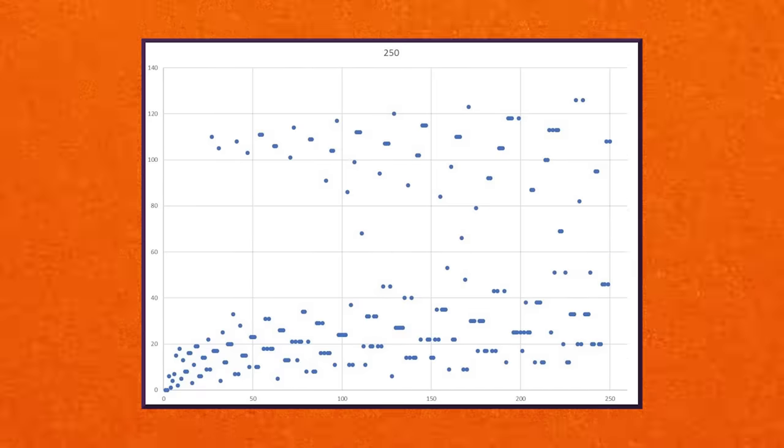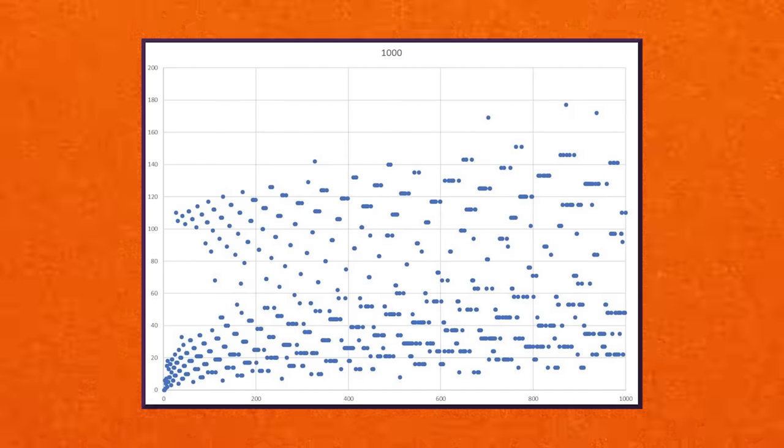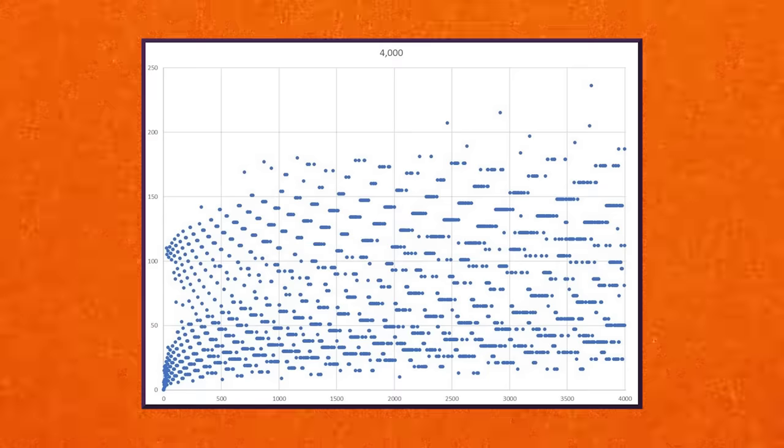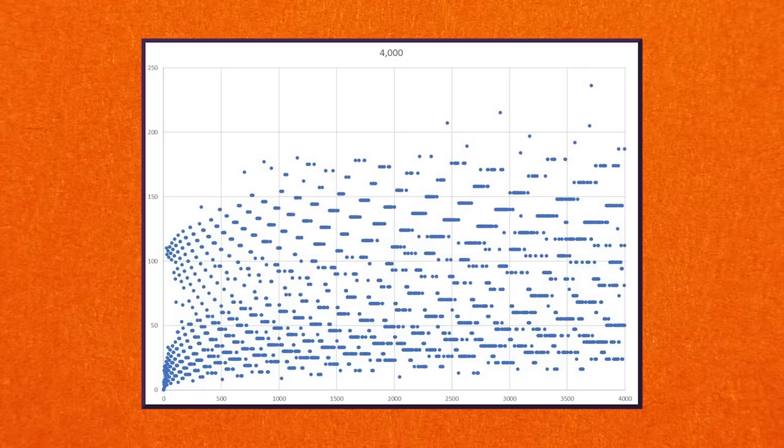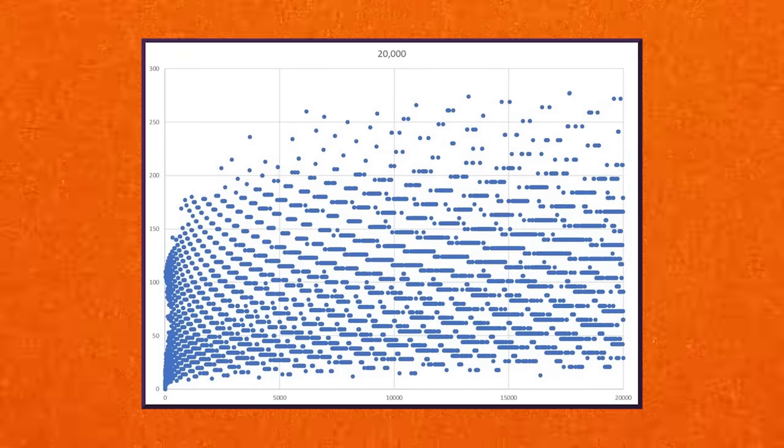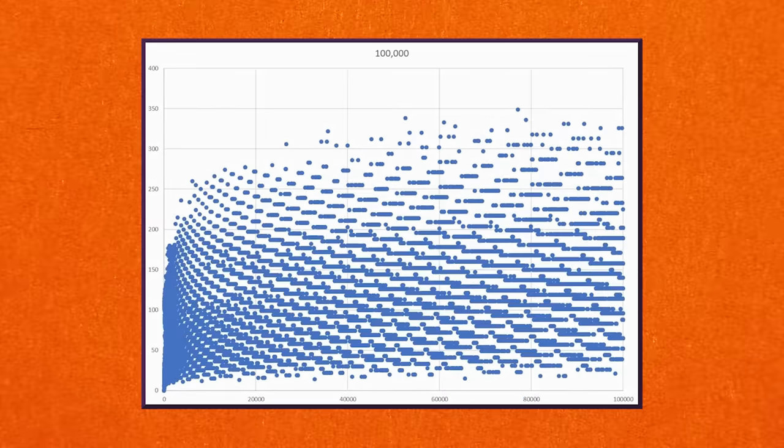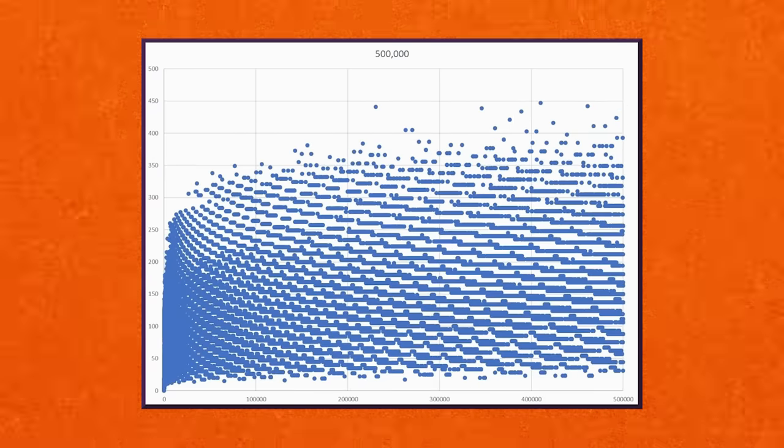So how can it be that a simple mathematical process with only two rules is completely unsolvable? Aspiring mathematicians have ruined their careers by pursuing a proof to this conjecture. Computers have checked every starting number from one through to three hundred quintillion—that's three followed by twenty zeros—and thus far every single number has reduced down to the one-four-two pattern.